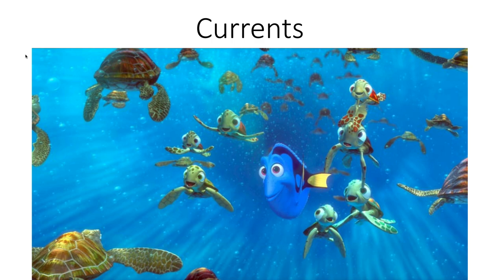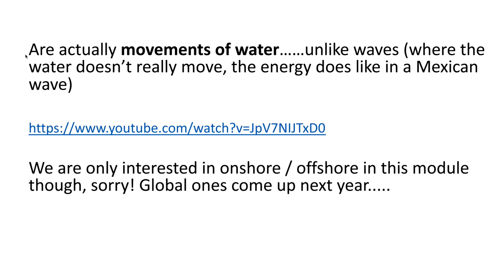If you don't know the story, Dory and Nemo hitch a ride in the EAC because the current is actually a movement of water. The PowerPoint is in the coasts folder and it's called 'structure and currents', so it should be easy to find. We're only interested in one particular type of current this year — onshore and offshore, i.e. towards the coast and away from the coast. We talk about global scale ones like the Finding Nemo kind next year.